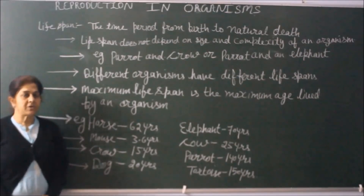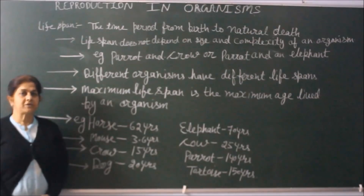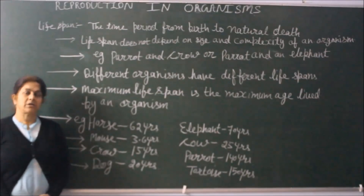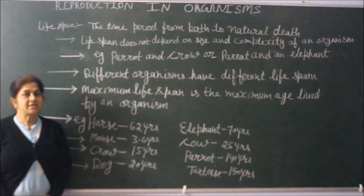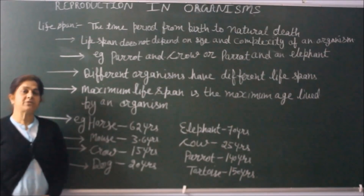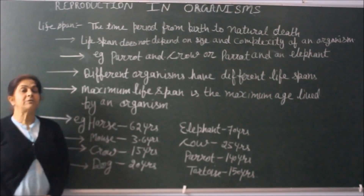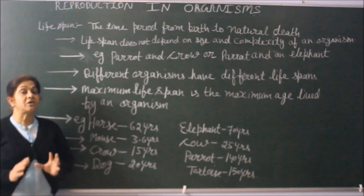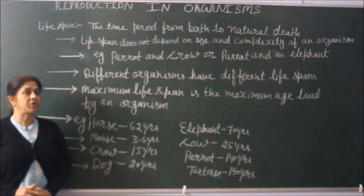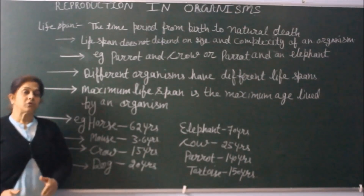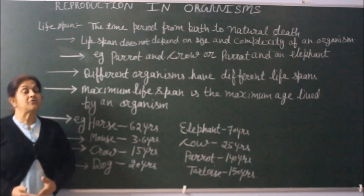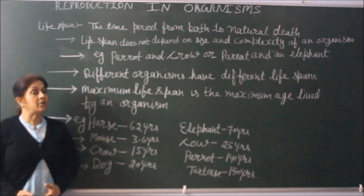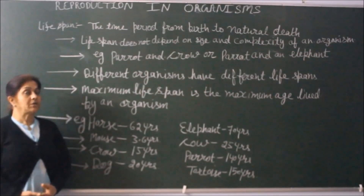We are starting with our first chapter of unit one, that is Reproduction in Organisms. As the name indicates, in this chapter we will be studying a general aspect of reproduction in different organisms. What are the different topics that we will come across during this chapter?